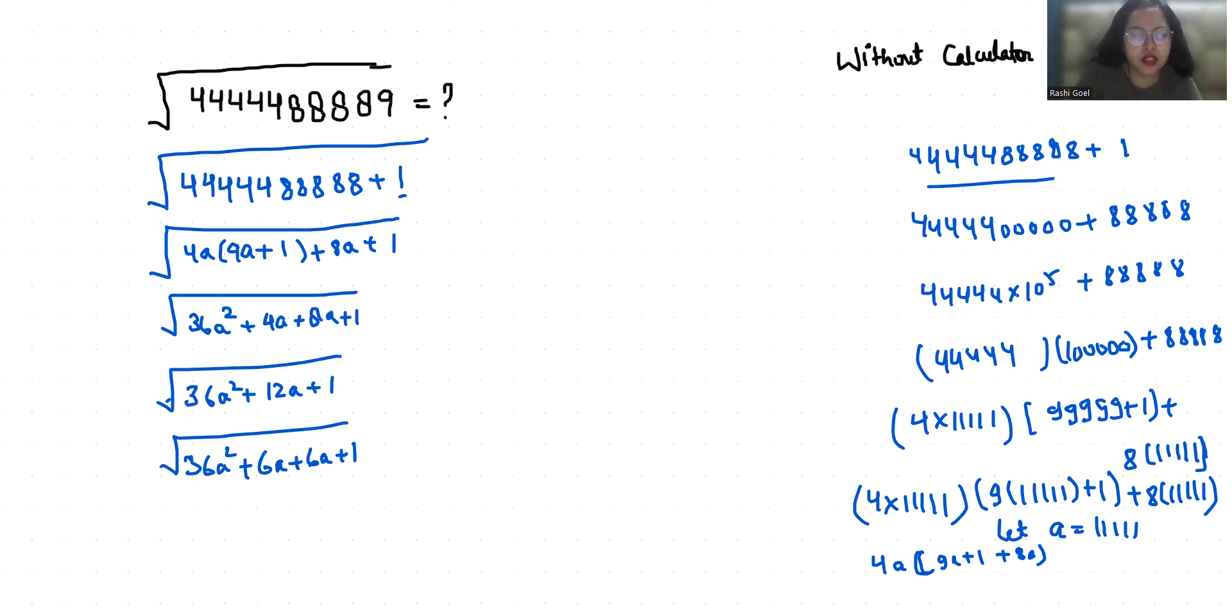If I take 6a as common, I get 6a plus 1. And if I take 1 as common, I get 6a plus 1.